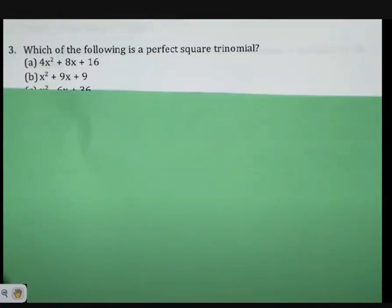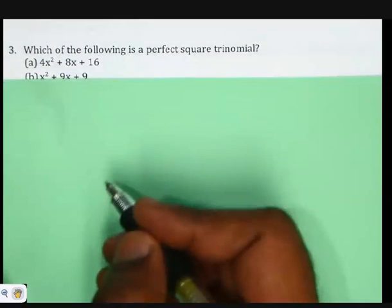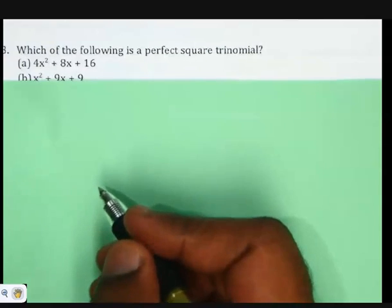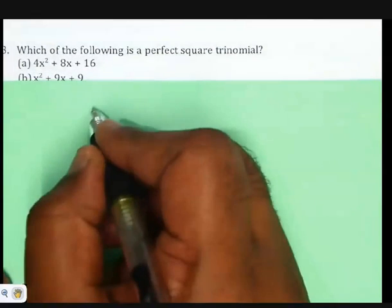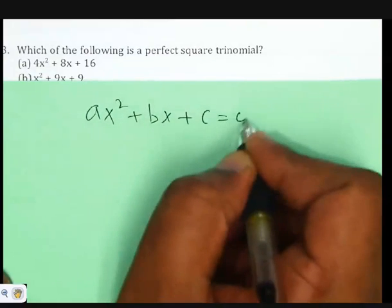For a trinomial to be a perfect square, we learned in the nature of the roots. Let's say ax² + bx + c = 0.